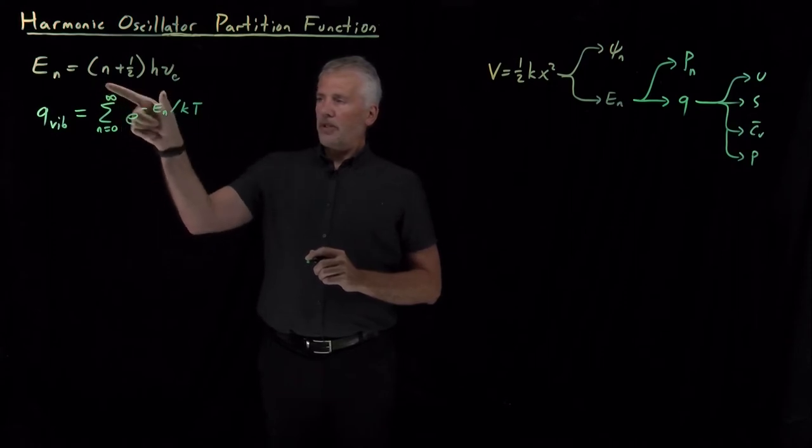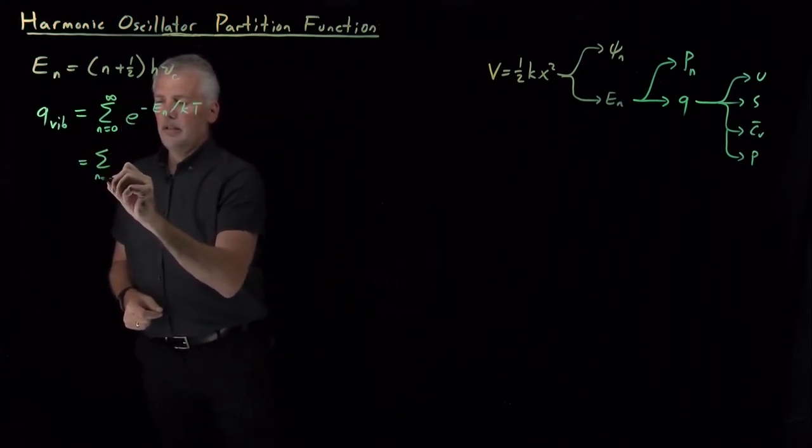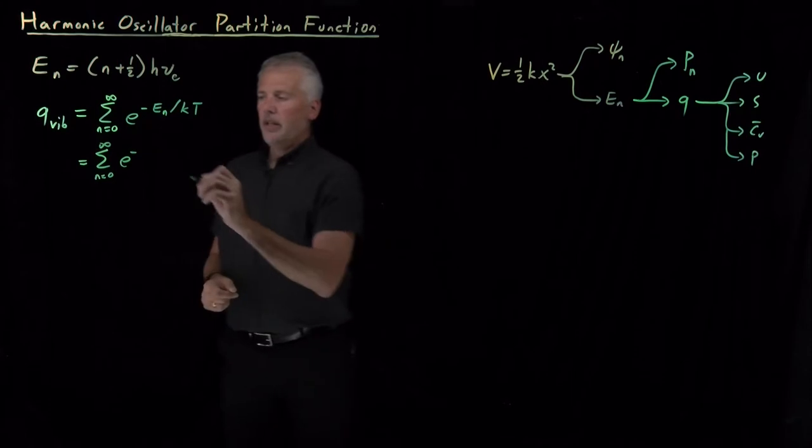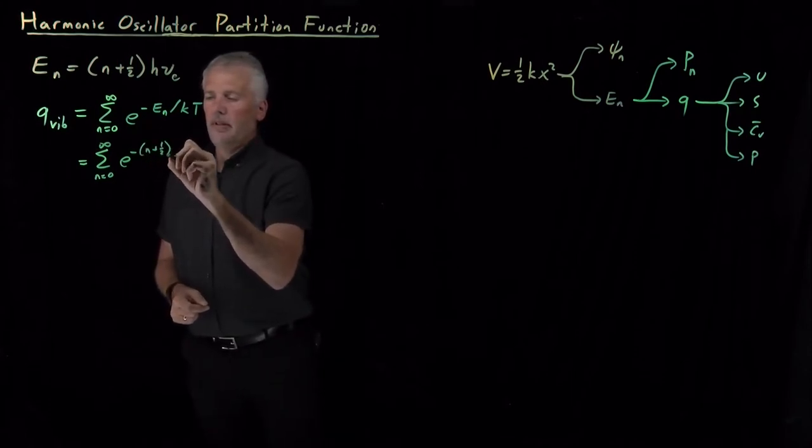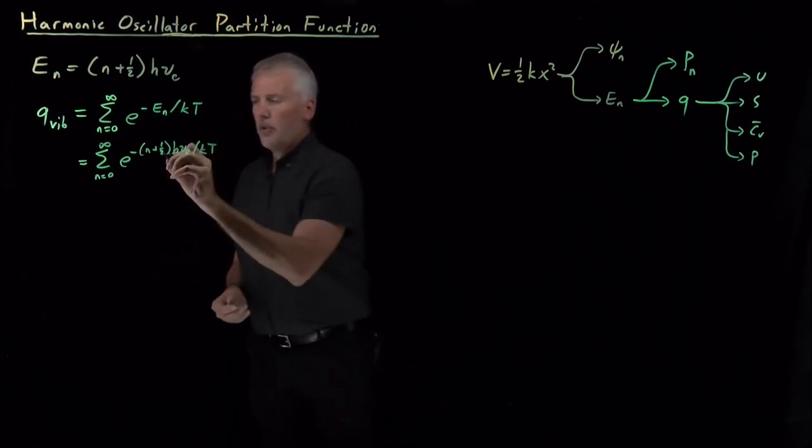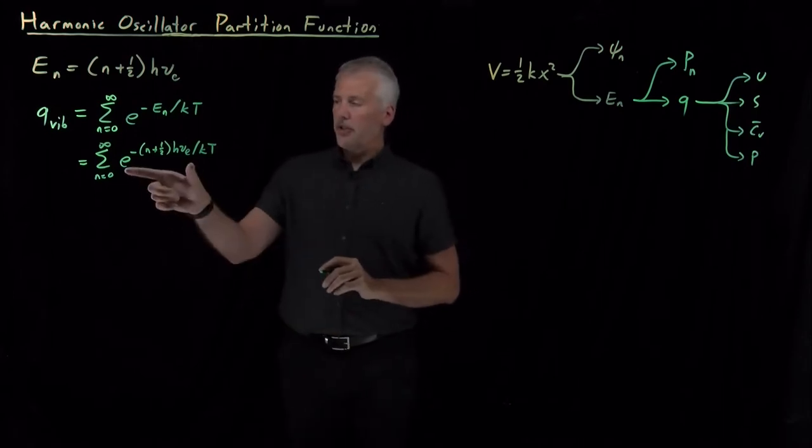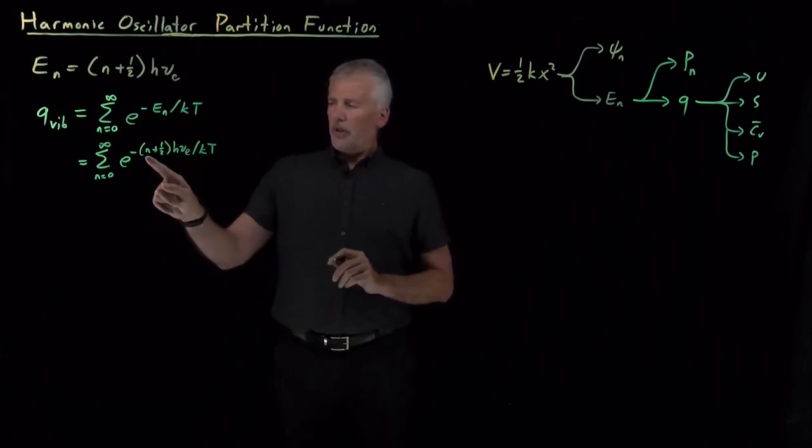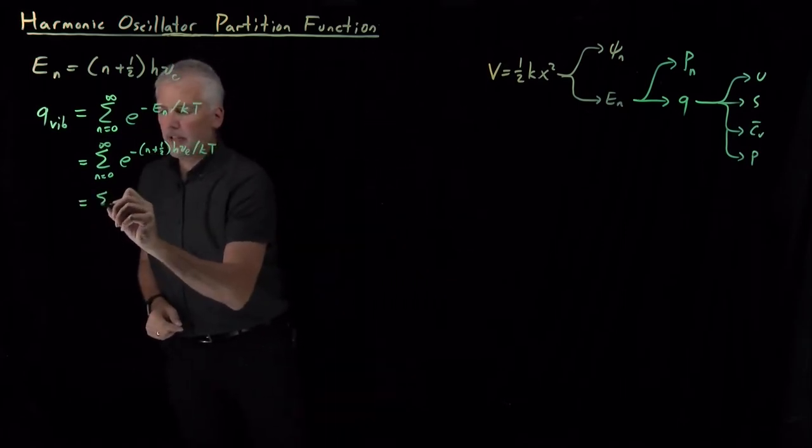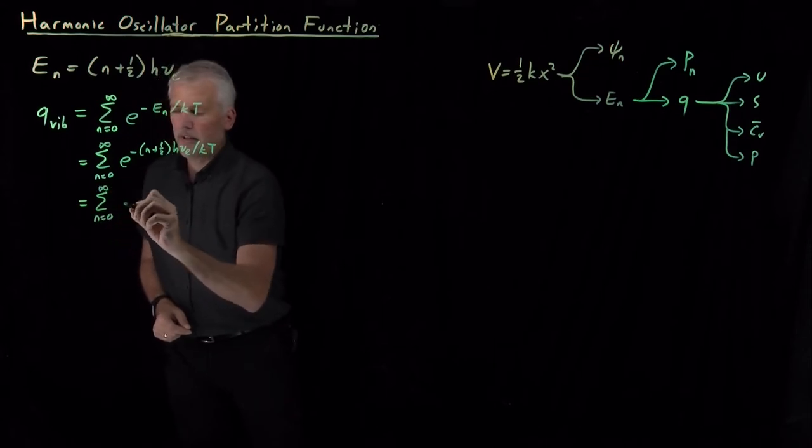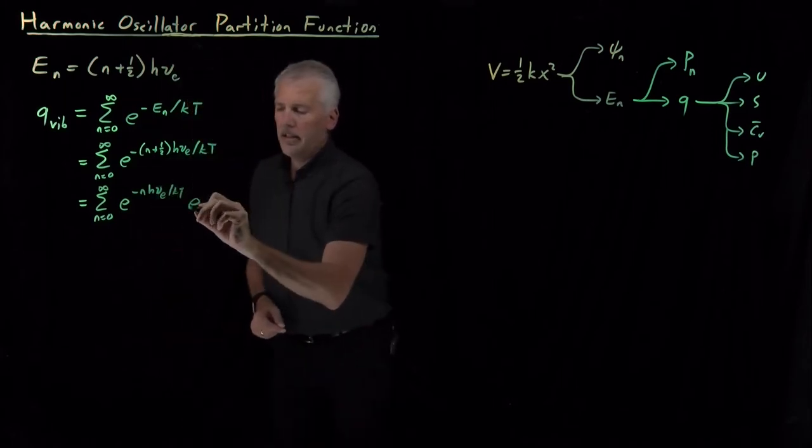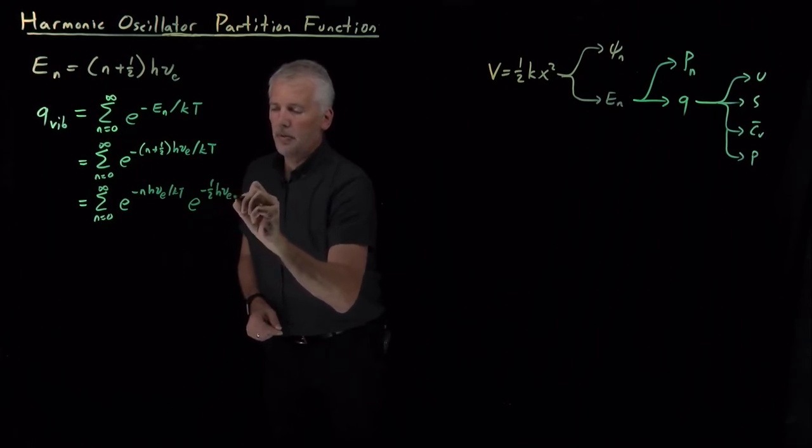If I substitute this expression for e sub n, I'll get e to the minus this energy, (n + 1/2)hν, all divided by kT. So that can simplify a little bit. First of all, n + 1/2, I've got a sum inside the exponent of this exponential. So I'm going to break that up into two different exponentials. Inside the sum, I've got e to the minus nhν/kT and e to the minus (1/2)hν/kT.